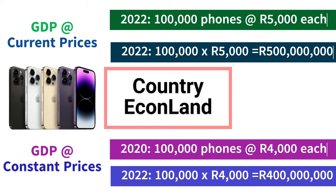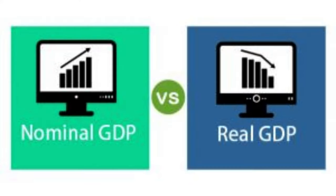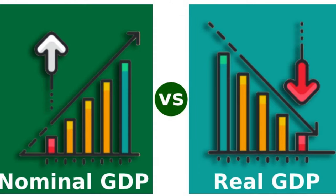The key difference between GDP at current prices and GDP at constant prices lies in how they handle changes in price levels. GDP at current prices reflects the economic output using current market prices, which means it includes the impact of inflation or deflation. In contrast, GDP at constant prices adjusts for inflation by using fixed prices from a chosen base year, allowing for a more accurate comparison of economic performance over time and providing a more meaningful measure of economic growth across different periods.